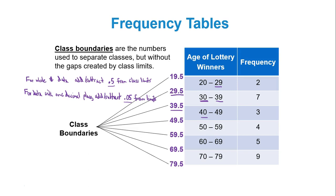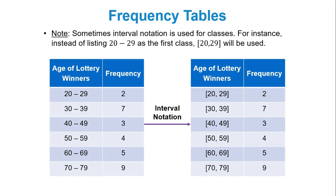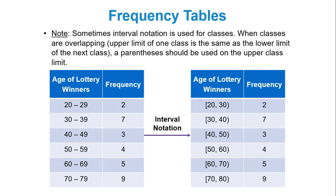People have different preferences for how to create frequency tables. Sometimes they'll use what is called interval notation for the classes. For instance, if you see 20 to 29 as a class, they may write 20 comma 29 enclosed within brackets. It is called interval notation. It's the same thing as saying anything from 20 to 29, including 20 and 29 themselves, is class 1. 30 to 39, you have 30 comma 39 enclosed within brackets. It means the same exact thing.